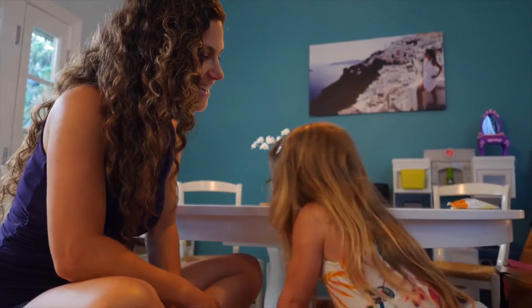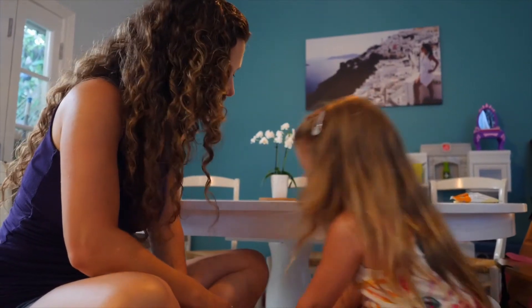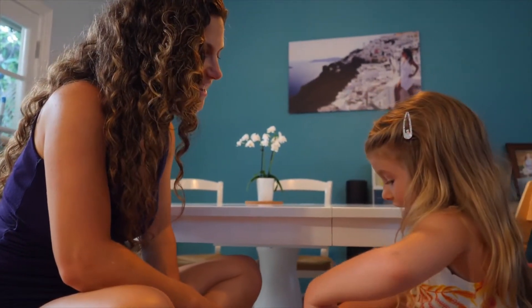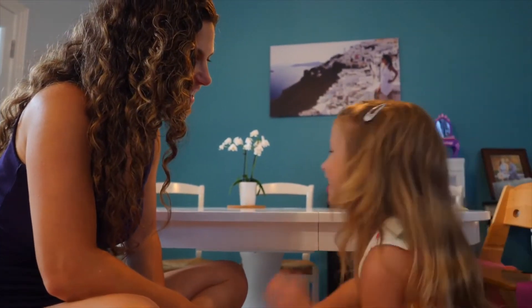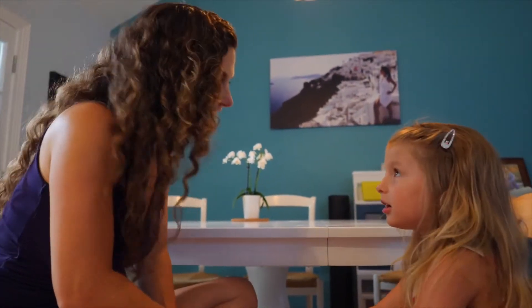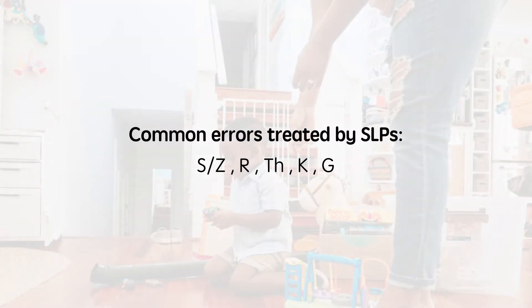In the case of a lisp, a child places their tongue in between their teeth, creating a 'th' sound, instead of behind their teeth, creating an 's' or 'z' sound. SLPs often treat errors with 'er,' 'th,' 'k,' and 'g' as well.